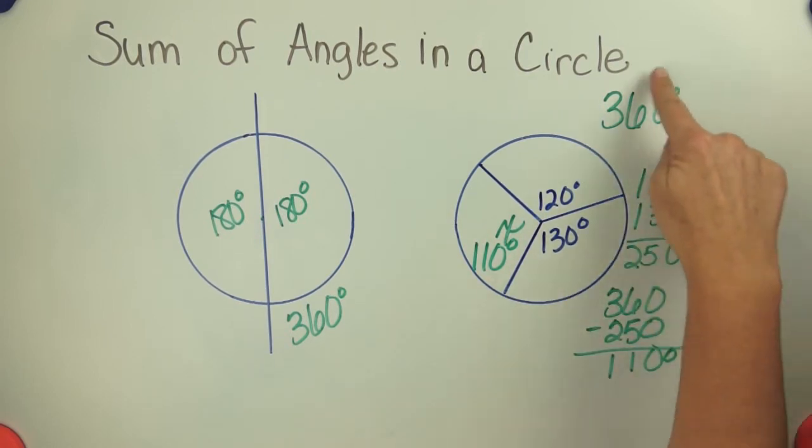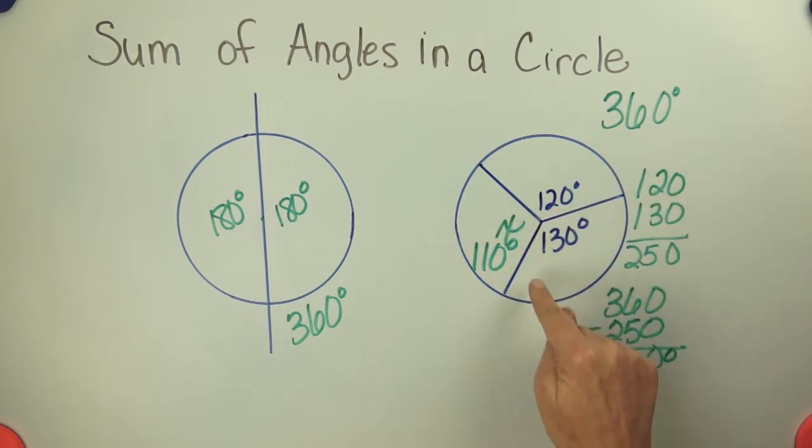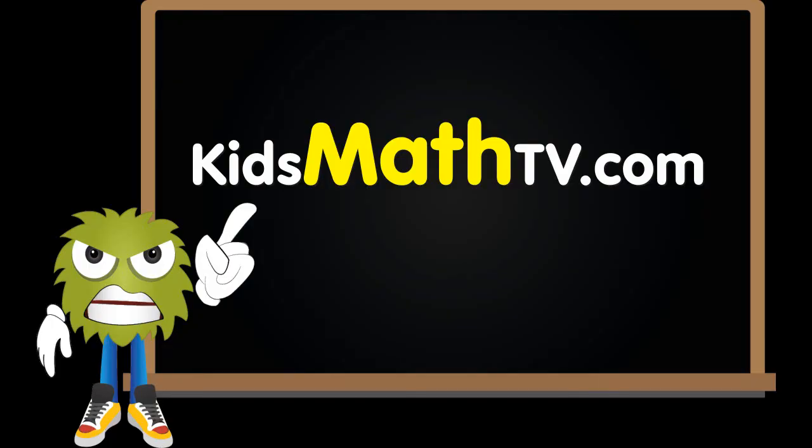So 360 degrees in an entire circle can help you find the measure of a missing angle. And that's the end of our lesson on the sum of angles in a circle.